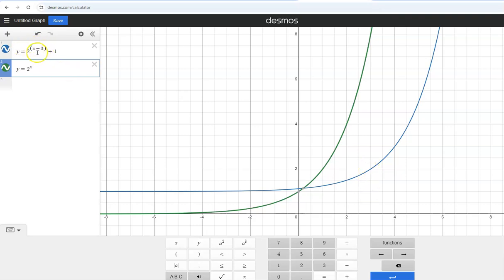So you take the opposite of the value in the parentheses. So the opposite of negative 3 is 3. Or you can think, what makes x minus 3 equal to 0? Well, that's 3, and that's your horizontal shift. And then your vertical shift is right here, plus 1. So move it up 1.